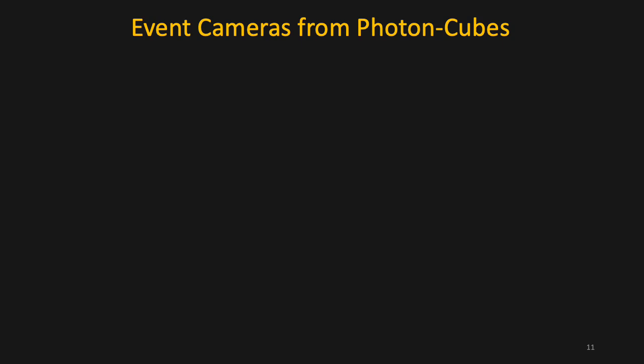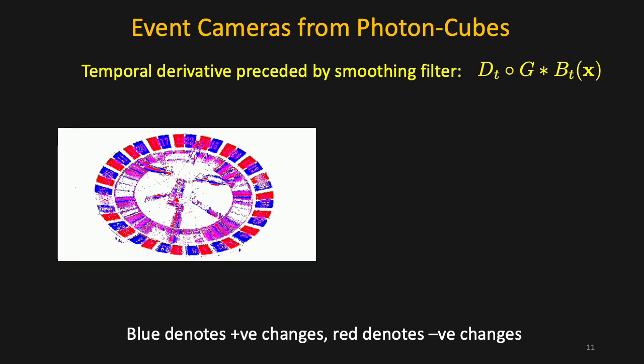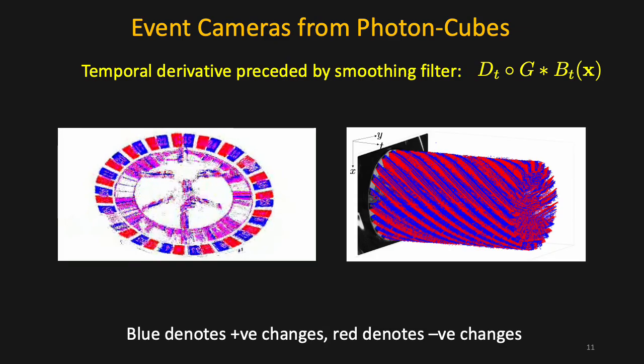Next, we show photon cube projections that can emulate event cameras by computing temporal derivatives. Event cameras generate a stream of outputs in response to scene dynamics. We can visualize these outputs by binning them into a sequence of frames or by using a 3D spatial temporal plot.